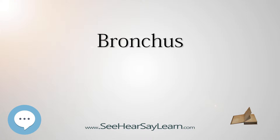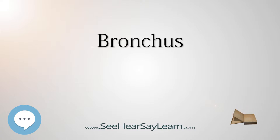The left bronchus has no eparterial branch, and therefore it has been supposed by some that there is no upper lobe to the left lung, but that the so-called upper lobe corresponds to the middle lobe of the right lung. The left main bronchus divides into two secondary bronchi or lobar bronchi, to deliver air to the two lobes of the left lung: the superior and the inferior lobe.